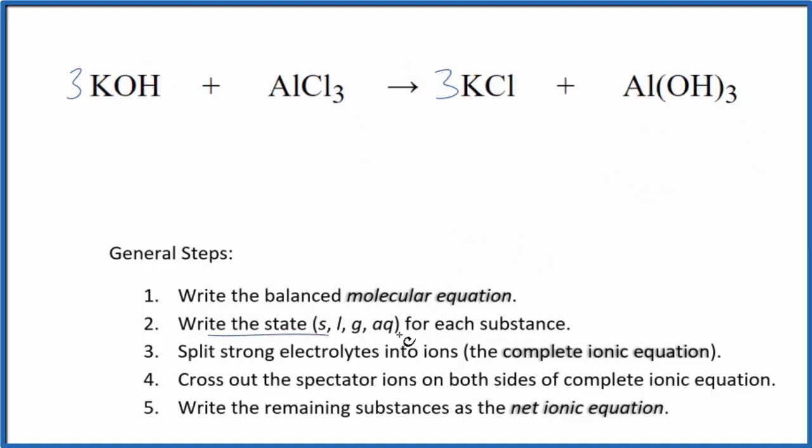Now we need to write the state for each substance. If you know your solubility rules, potassium compounds are pretty soluble. And this is a strong base, KOH, potassium hydroxide. That's going to be a soluble compound, dissolve, dissociate into its ions.